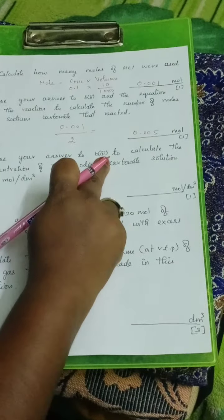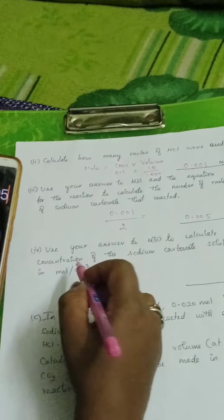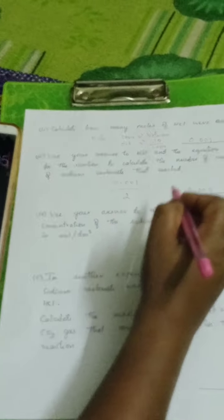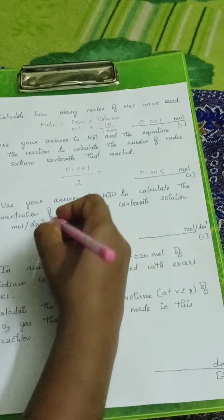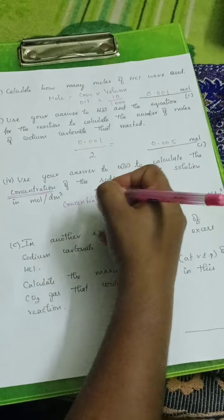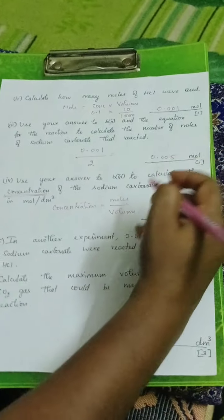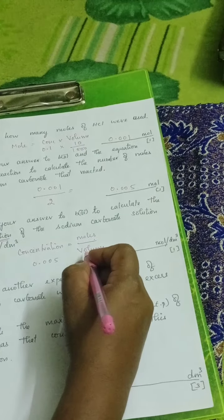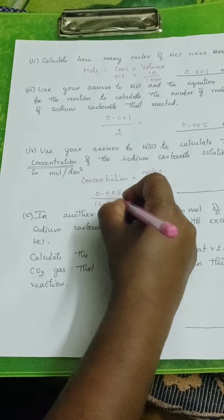Use your answer to B3 to calculate the concentration of the sodium carbonate solution in mole per decimeter cube. B3 is 0.0005. If this is 0.0005, what formula do we use? Concentration is equal to moles by volume. What is the mole here? 0.0005. And what is the volume? 0.0005 by 16.2 by 1000.